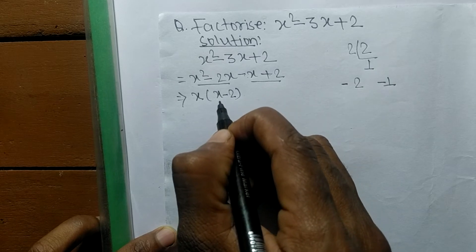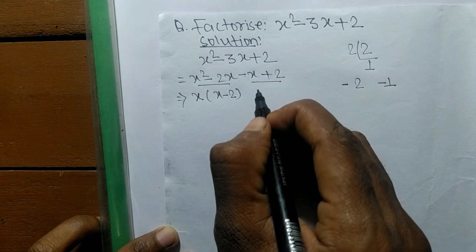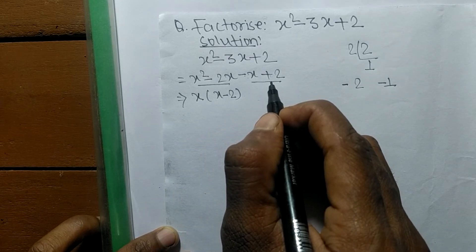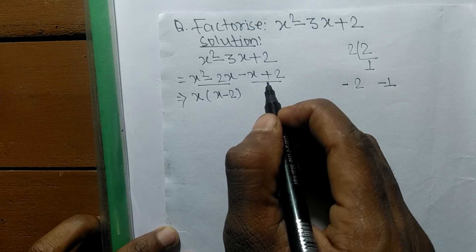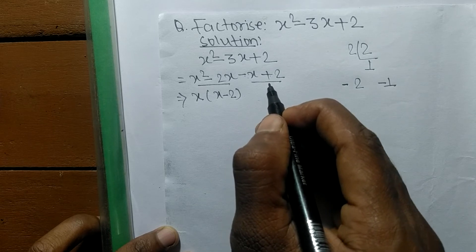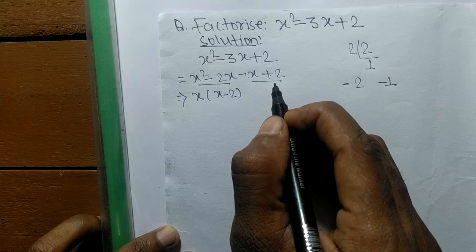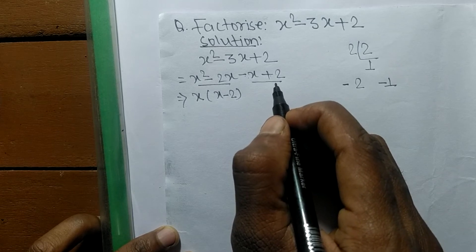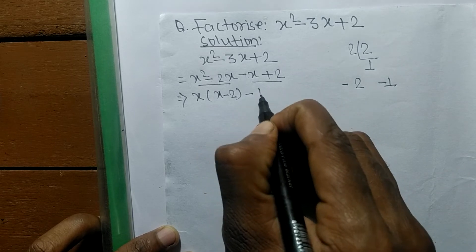In the second pair there is no any number or expression common. So when there is no any number or expression common, then in that case the common is 1. So the common here is minus 1, so the remaining is x minus 2.